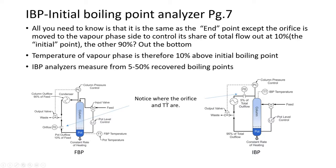The Initial Boiling Point is a lower temperature, so we get less material coming out — the other 90% goes out the bottom. The vapor phase temperature is 10% above the initial boiling point. Initial Boiling Point analyzers measure from 5 to 50 percent of the recovered boiling points — lower temperature gets the stuff that comes off more easily. Final Boiling Point recovers the 50% to 100% portion of the sample.